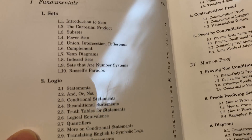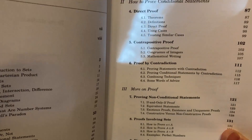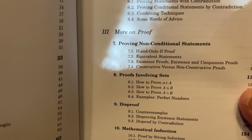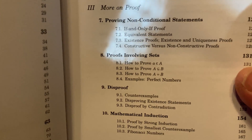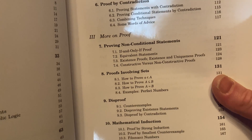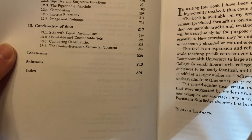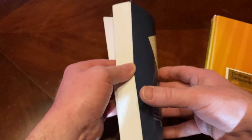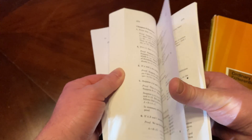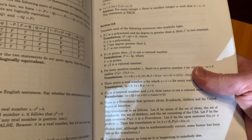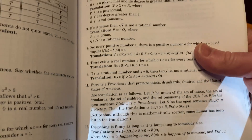Logic, sets, and counting — good places to start. Direct proof, contrapositive proof, proof by contradiction, and more. The proofs are very well written, which is what makes this book so good. It has solutions starting around page 240 — a lot of answers, full proofs. So it's perfect for self-study.